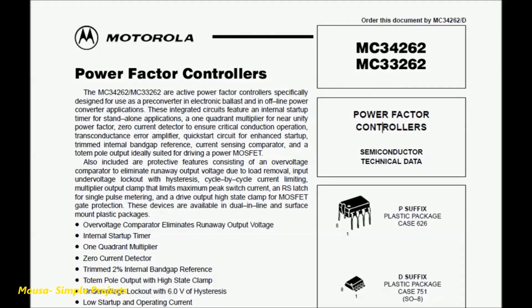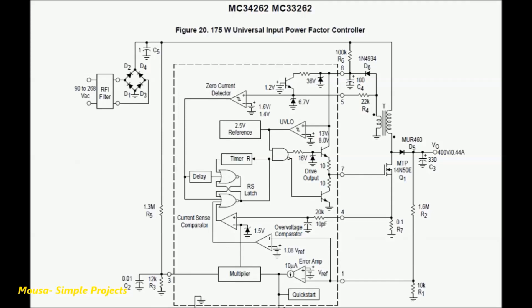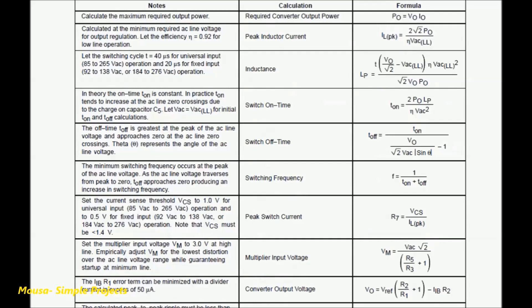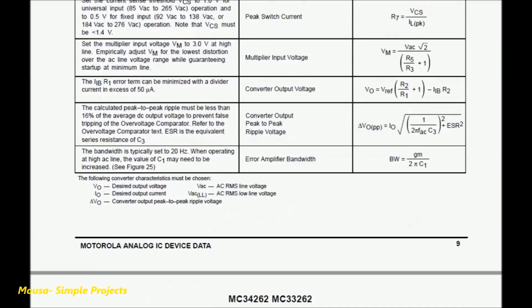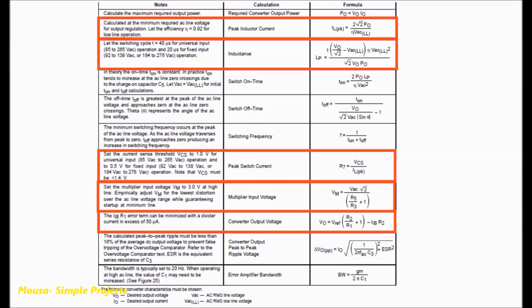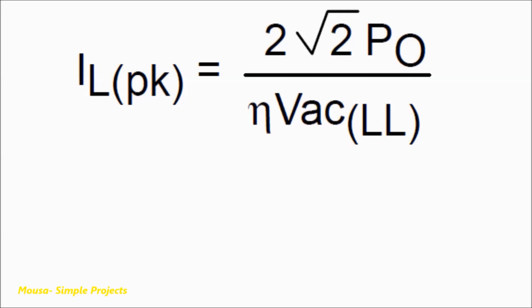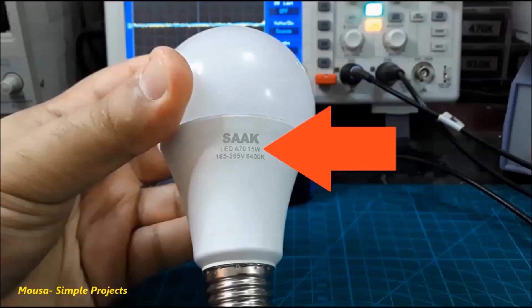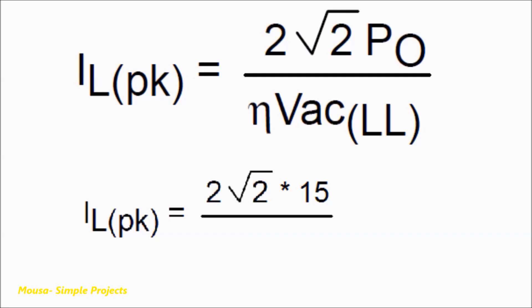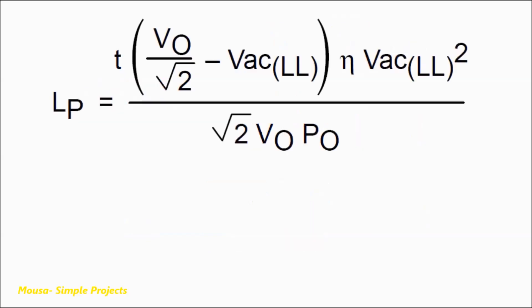The circuit is shown in the datasheet, but you have to use some formulas to calculate the values of resistors and inductor. Only five formulas are important. The first formula determines the peak current of the inductor. The output power I need is 15 watts, efficiency according to the datasheet is 0.92, and the low-line voltage in my case is 200 volts, so the peak current of the inductor equals 230 milliamps.